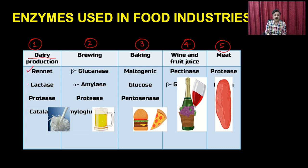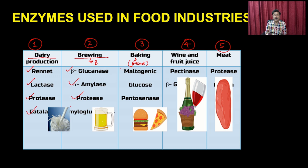All these industries use different types of enzymes. In the dairy industry: rennet, lactase, protease, and catalase. In the brewing industry, which produces beer and alcoholic beverages: beta-glucanase, alpha-amylase, proteases, and amyloglucosidase. In the baking industry: maltogenic amylase, glucose oxidase, and pentonases. In the wine and food industry: pectinase and beta-gluconase. In the meat industry: proteases and papain.